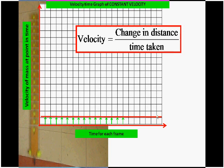We end up with a straight line. This straight line on a velocity time graph represents constant velocity.